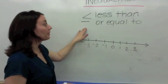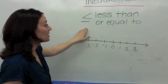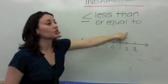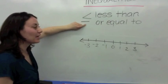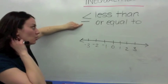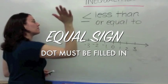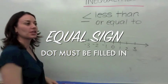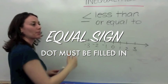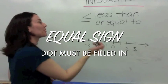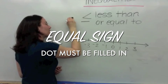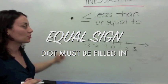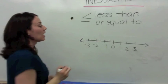The last inequality we're going to learn about today is less than or equal to — the less than symbol with a little equal sign. When you see the equal sign, you have to splat, just like killing a bug. When you kill a bug, you get all this stuff left over — you're going to fill in the circle.